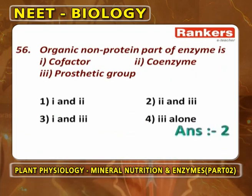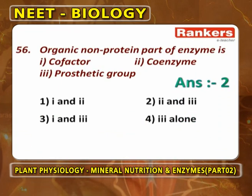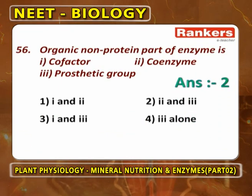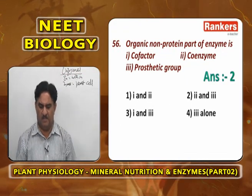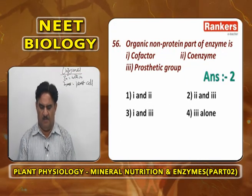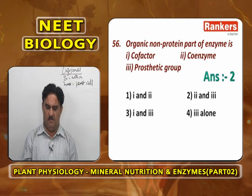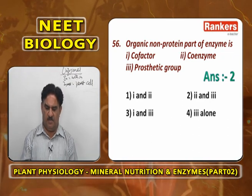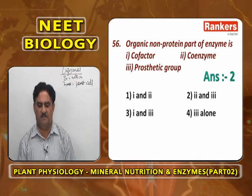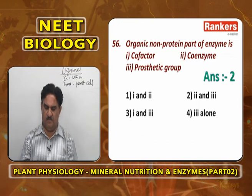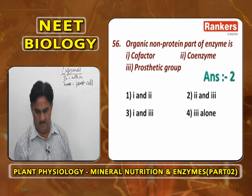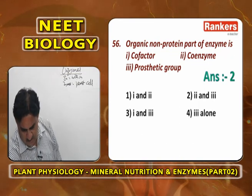For the question about organic parts of an enzyme, the answer is options 1, 2, and 3 — apoenzyme, coenzyme, and prosthetic group. For the organic non-protein part of an enzyme, the answer is coenzyme and prosthetic group — options 2 and 3.